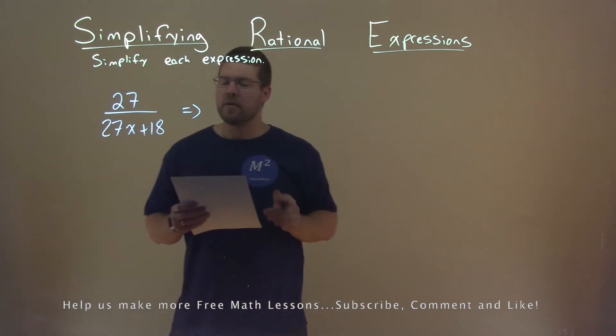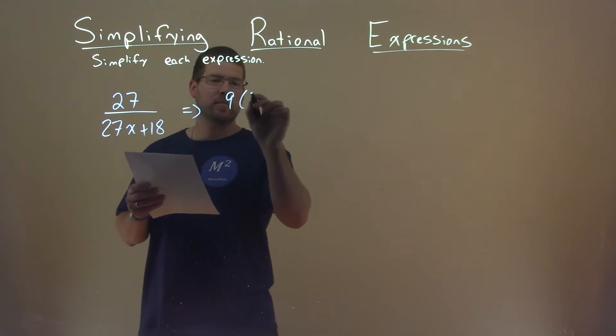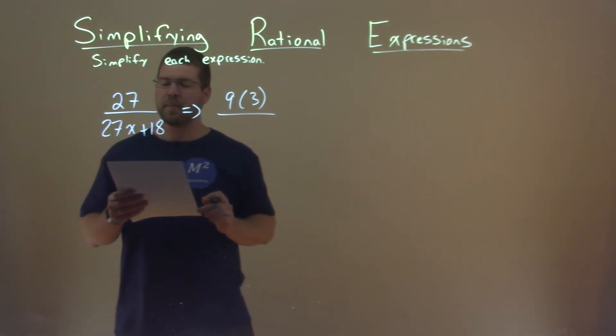Well, let's see if we can break down 27. I know 27 is 9 times 3. What about the denominator? Can we break that down? Can we pull a common factor?